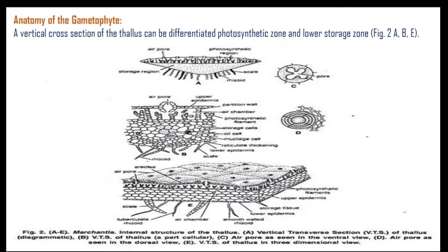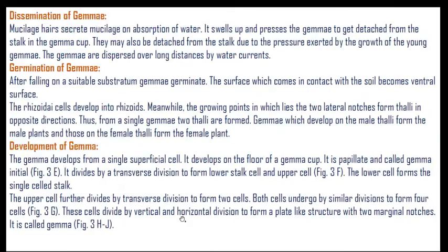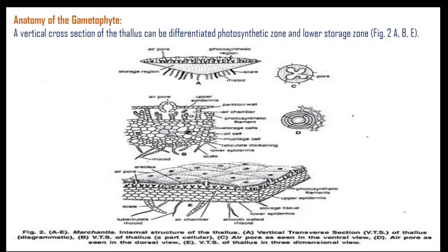Some cells are filled with oil and some with mucilage. There are reticulate thickenings on the lower epidermis; some cells become rhizoids and some become scales. The complete surface view of the thallus shows the main midrib, air pores, and on the side view the photosynthetic zone and storage zone. On the lower surface there are protective scales, tuberculate rhizoids, and smooth rhizoids.